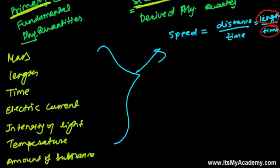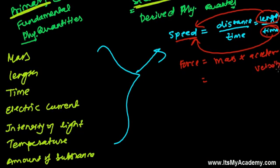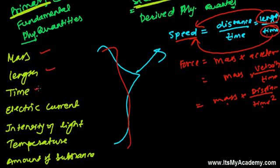Speed is made from two fundamental things — length and time — so speed is derived from length and time. Similarly, if you take force: force is mass times acceleration. Mass is itself a fundamental quantity, and acceleration is velocity divided by time, and velocity is displacement divided by time. So force involves mass, length, and time squared — all fundamental quantities.